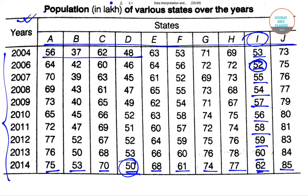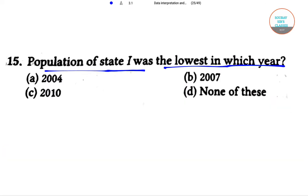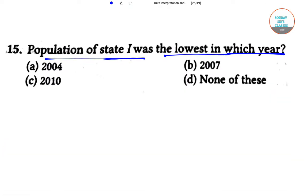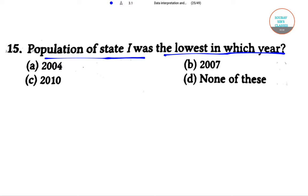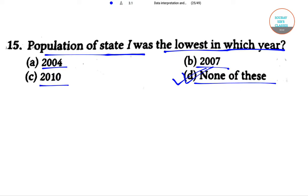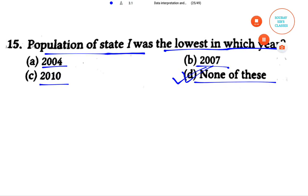Now let's move to the options. From the table it is clear that the population of state I was the lowest in the year 2006. The options given are 2004, 2007, 2010, and none of these. So D will be the answer, as the correct answer is 2006. Thank you for watching this video.